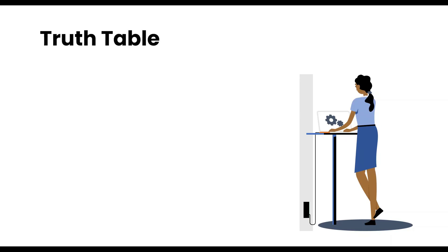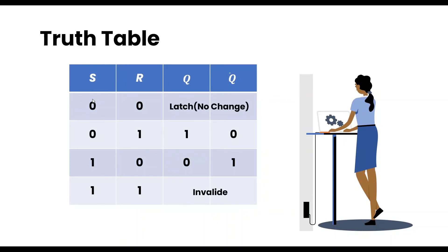Now let's discuss the SR latch truth table. When S equals 0 and R equals 0, Q and Q-bar show no change. When S equals 0 and R equals 1, output Q is 0 and Q-bar is 1. When S equals 1 and R equals 0, Q is 1 and Q-bar is 0. When S equals 1 and R equals 1, the output is invalid.